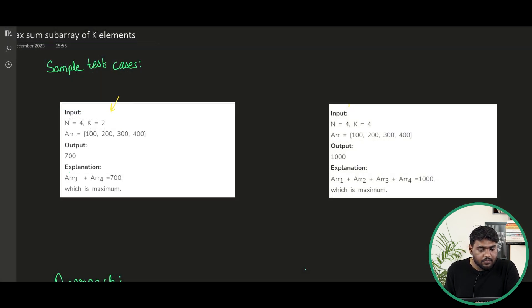So here is the first sample test case. As you can see n is 4, k is 2, and this array of 4 size is given. We have to take the subarrays of size 2, find the sum of it and return the maximum sum. The first subarray could be 100 and 200. The sum of this will be 300. Then the next subarray could be 200 and 300. The sum is 500.